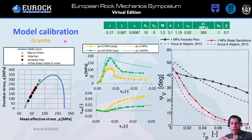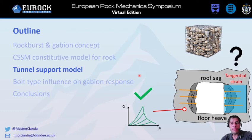Not only sandstone but also granite — we see a good prediction of the model here too. Now that the model is calibrated, as you can read in the paper, we used it to see the influence of support on our gabion.